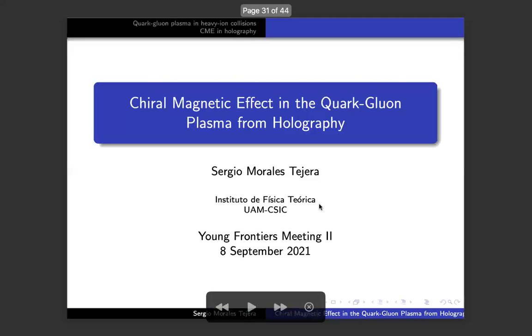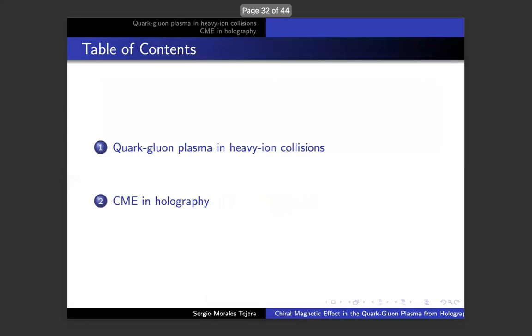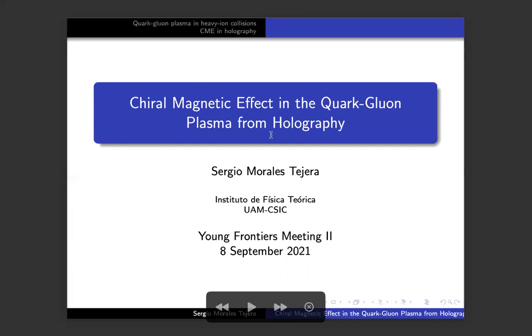Thanks a lot, Joaquin, for your talk. Our final speaker of this gong show is Sergio Morales Tejera, who is going to be talking about chiral magnetic effect in the quark-gluon plasma from holography. I'm Sergio Morales Tejera, a PhD student under the supervision of Karl Landsteiner. I'm going to talk about the CME in the QGP from holography. So first of all, what is the chiral magnetic effect? It is the generation of an electric current in the presence of an external magnetic field and a chirally imbalanced medium. It's a consequence of the axial symmetry of QCD being anomalous.